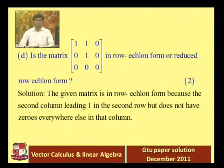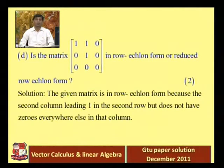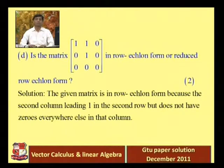Question 1d: Is the matrix [1, 1, 0; 0, 1, 0; 0, 0, 1] in row echelon form or reduced row echelon form? Before solving, let us recall the definitions of row echelon form and reduced row echelon form.